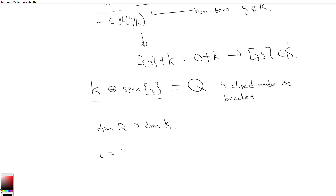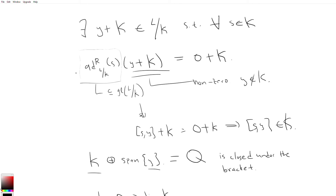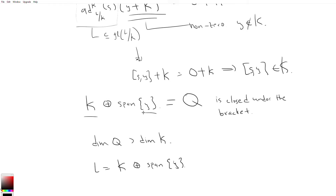So we have L = K ⊕ span(Y). This is the whole point — we used the factor representation to find the vector Y. We had to apply the inductive hypothesis to an entirely different space structurally, but the theorem only requires a finite-dimensional vector space, and L/K has finite dimension, so it applies.